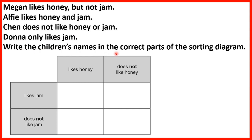Write the children's names in the correct parts of the sorting diagram. So first let's look at Megan. She likes honey, so she'll be under this column here because that's the column for likes honey, but she does not like jam, so she'll need to be in this row here. We write Megan's name in this box because going up she likes honey and going to the left she does not like jam.